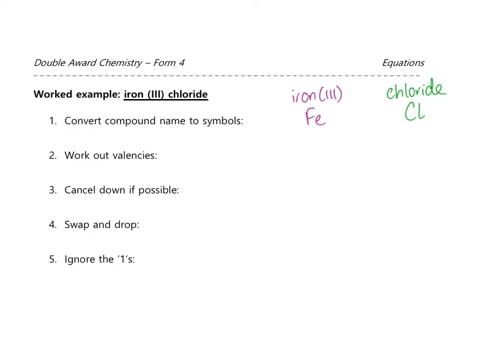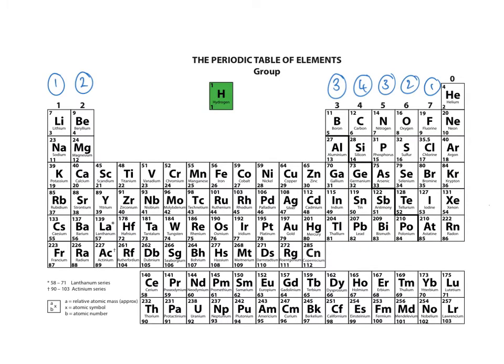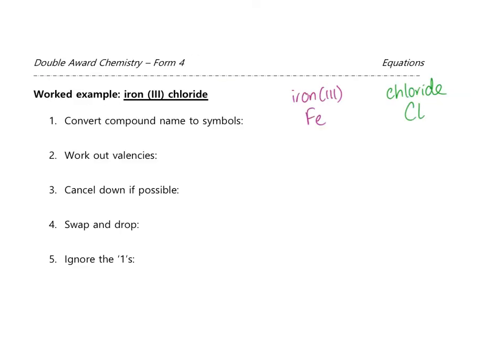Step two: work out the valencies. Iron is right in the middle of the periodic table and doesn't have a group number, so we can't get its valency from the group number. However, we've been given a number in brackets after the name — iron(III) — and that tells us the valency of iron is three. Chlorine is in group seven and has a valency of one.